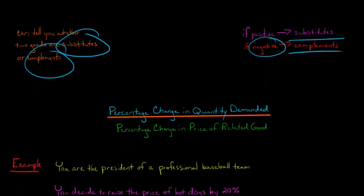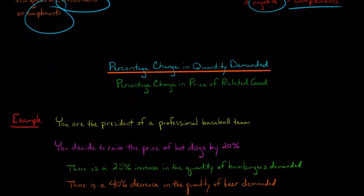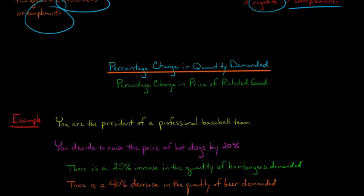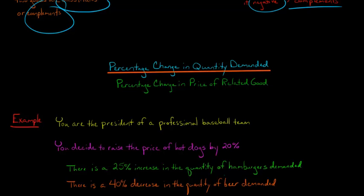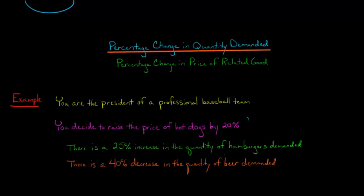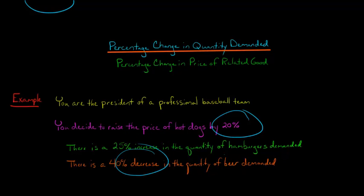Let's walk through an example. Pretend you are the president of a professional baseball team and you decide to raise the price of hot dogs by 20%. In response, there's a 25% increase in the quantity of hamburgers demanded at the baseball games, but there's a 40% decrease in the quantity of beer demanded — all in response to that 20% increase in the price of hot dogs.